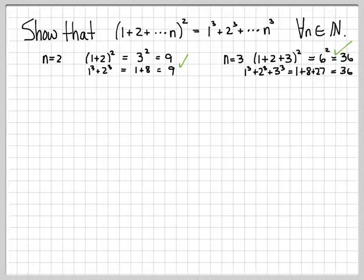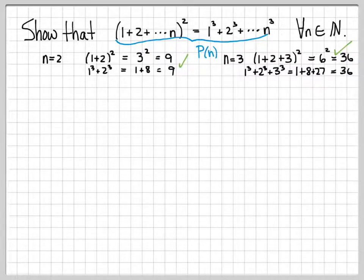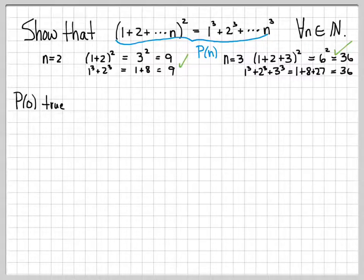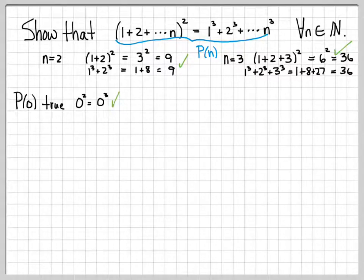To actually prove it, we're going to use mathematical induction. The first step is to establish that our statement is true. We think of this as a statement P of n, because as n changes, the mathematical statement changes. The first step in induction is to establish that P of 0 is true. When n equals 0, the left side is 0 squared and the right side is 0 cubed, so obviously 0 equals 0. Establishing P of 0 is very easy.